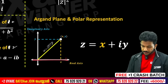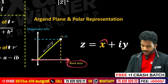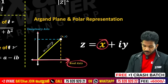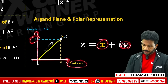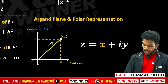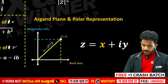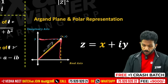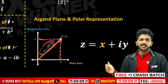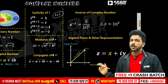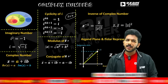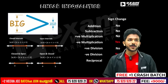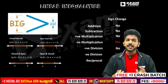In the Argand plane: the X-axis represents the real part, the Y-axis represents the imaginary part. Then a plus ib corresponds to the point (a, b), plotted as z. This is very simple.